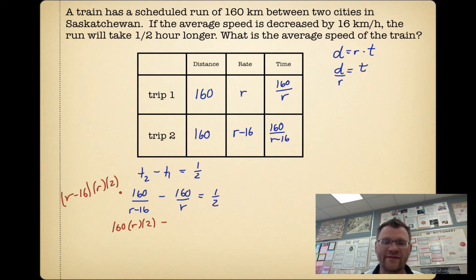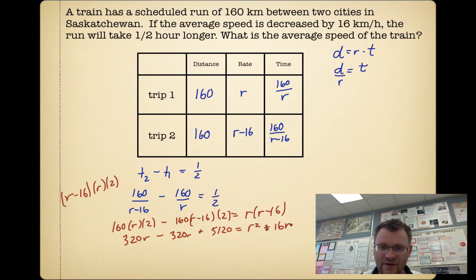When I multiply this out, I get 320r minus 320(r-16), which is 320r minus 320r plus 5120, equals r² - 16r. These two things cancel each other out, 320r minus 320r. Which means I can move the 5120 over to the other side. So I get 0 = r² - 16r - 5120. Now I have a quadratic. I could try to factor it or just plug it into the quadratic equation.